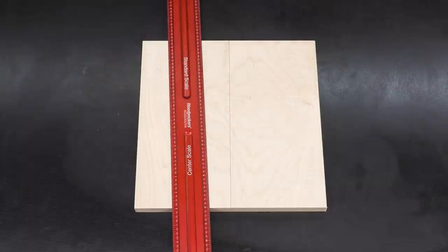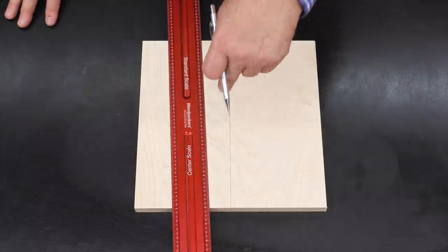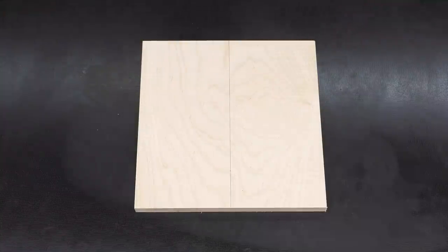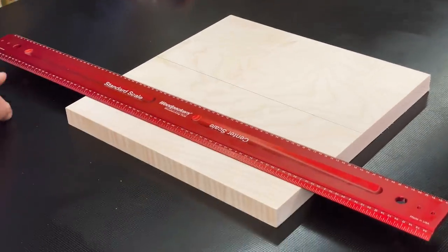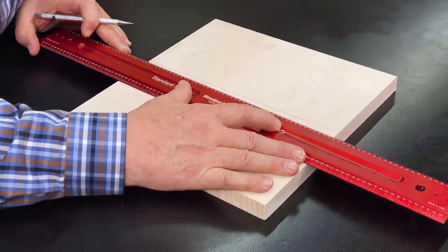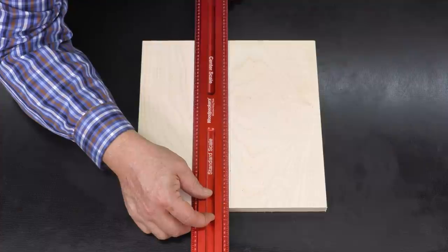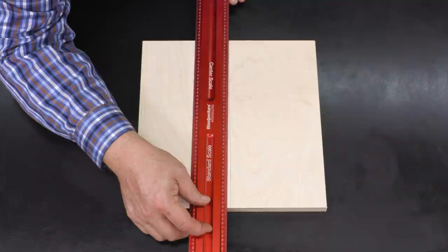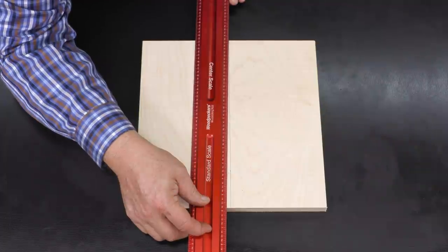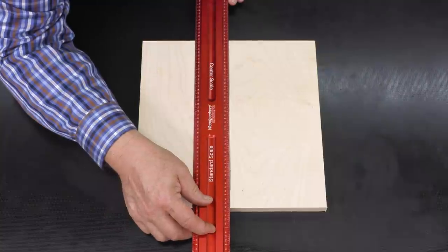But if we're off a tiny little bit it isn't going to matter because the entire layout is going to be based off of that line. Now we need to find the center of that line. So next we're going to find the center the other direction and just like before what really matters here is that when we find that center we want it in the middle of our board.